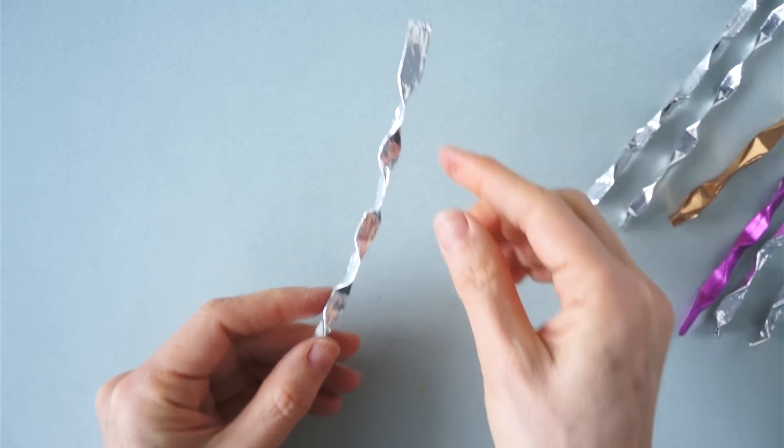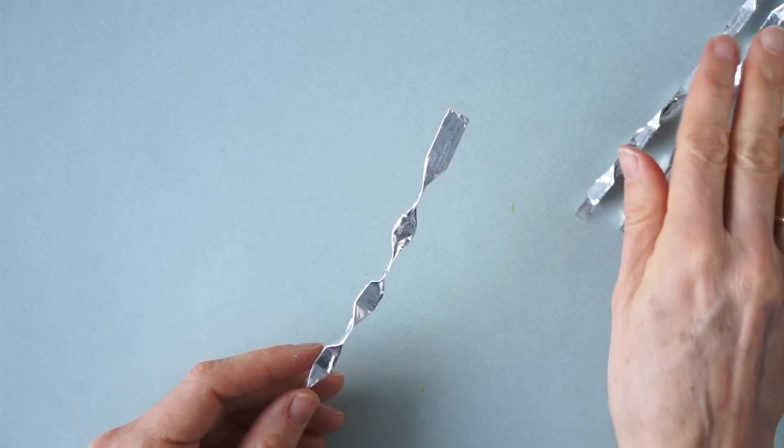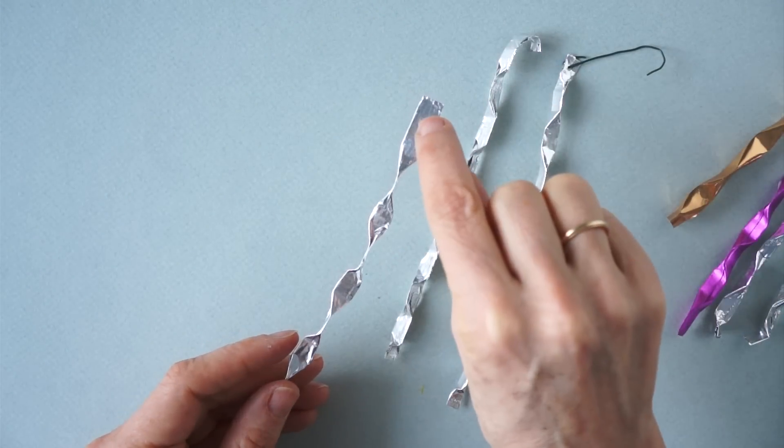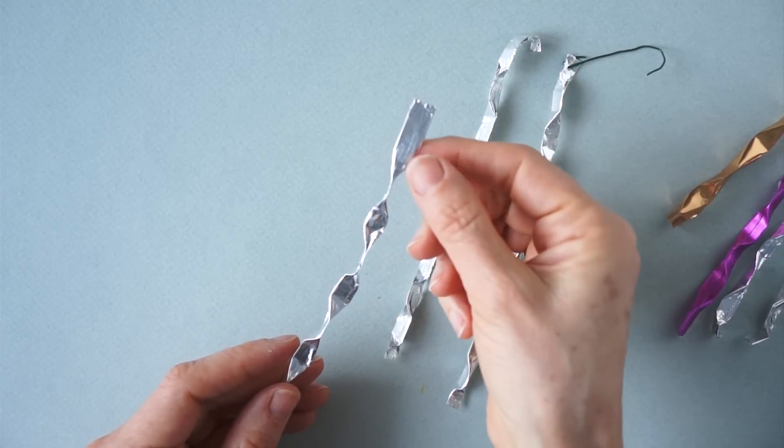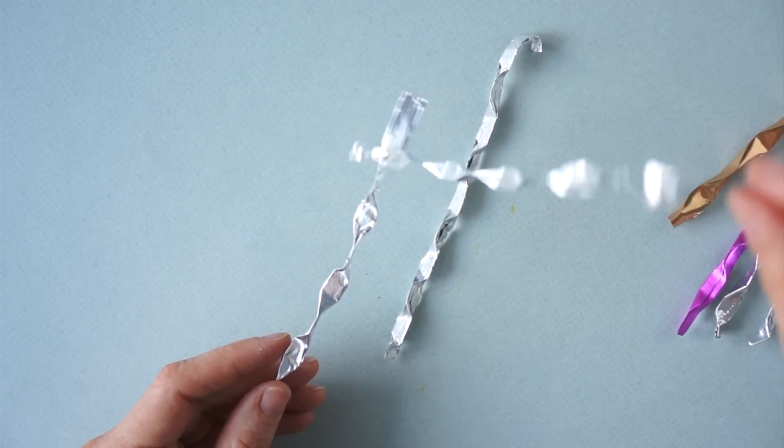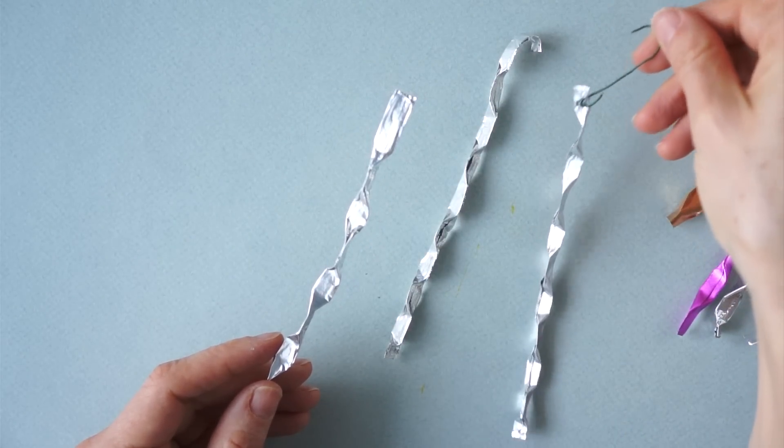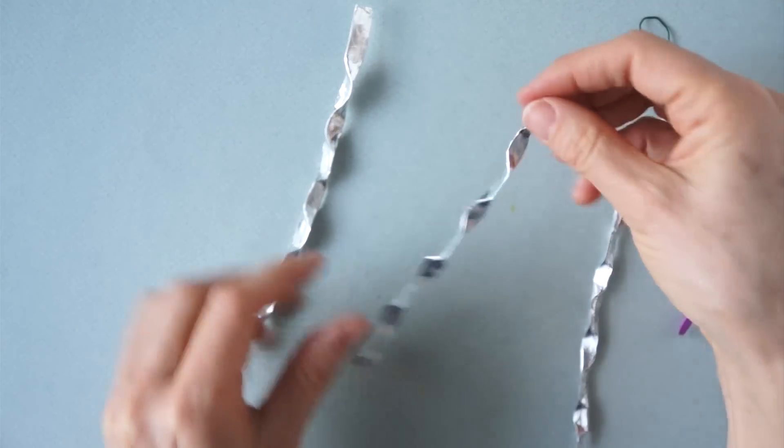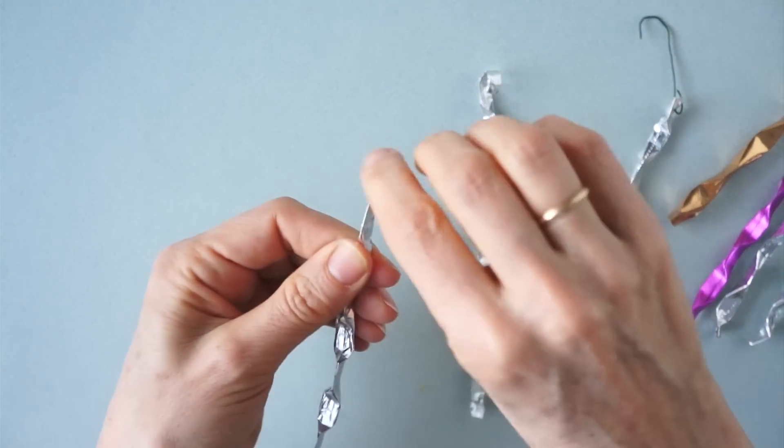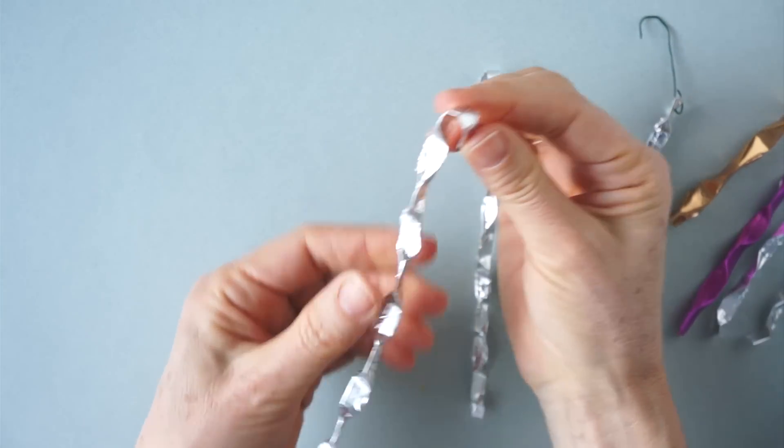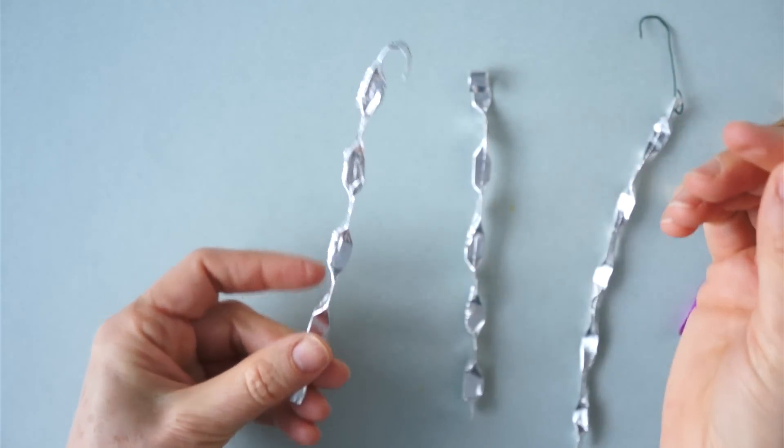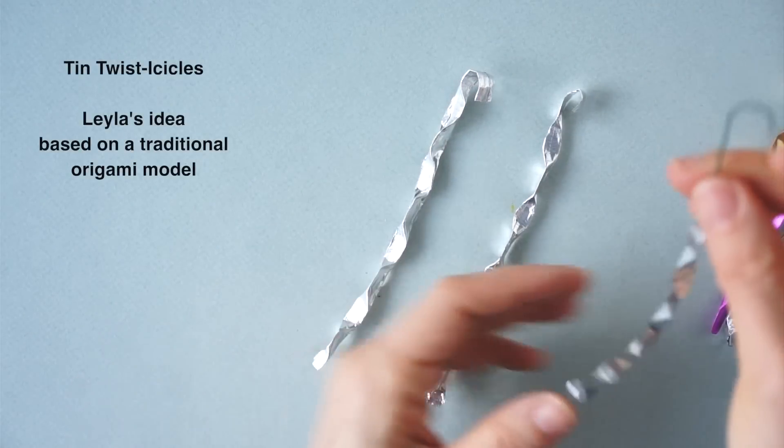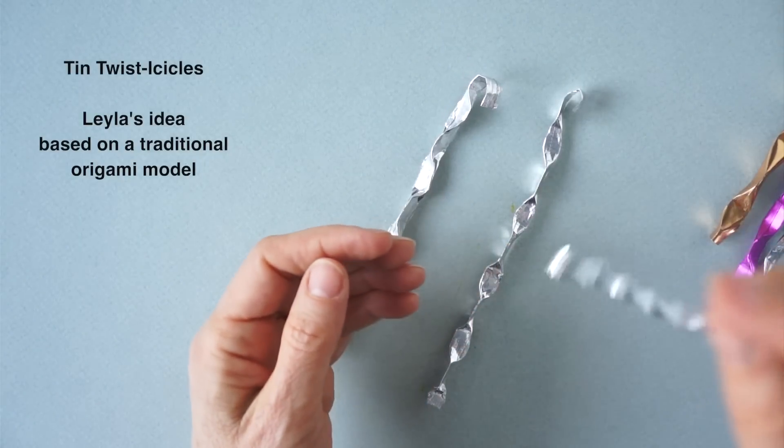Now, to hang them, we can either punch a little hole with a needle and hang it from a hook like this one, or we can just curl the end and hang it from the tree. I personally prefer using the hook because the ornament has a nice swing.